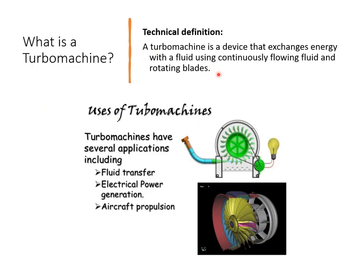The general definition of a turbo machine is a device that exchanges energy with a fluid using continuously flowing fluid and rotating blades. The three major applications are fluid transfer, electrical power generation, and aircraft propulsion, with subcategories under each.